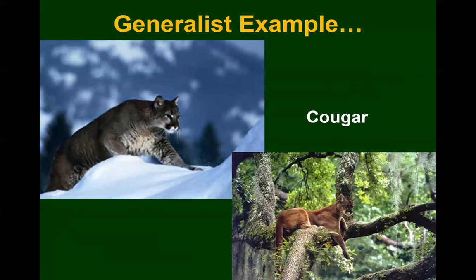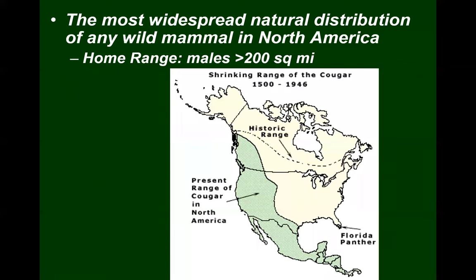A better example of a generalist would be the cougar — also called mountain lion, puma, panther — all names for the same animal. The cougar is one of the most widespread mammals on the planet, or at least historically they were. You can see their historic range in the tan color on the screen, from the big eastern United States all the way west, up to halfway through Canada, and extending all the way down to the tip of South America. Males have a home range of over 200 square miles.